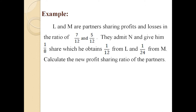For example: L and M are partners sharing profits and losses in the ratio of 7/12 and 5/12. They admit N and give him one net share, which he obtains 1/12 from L and 1/24 from M. Calculate the new profit sharing ratio of the partners. In this case, 1/12 from L and 1/24 from M is the share sacrificed by the old partners.